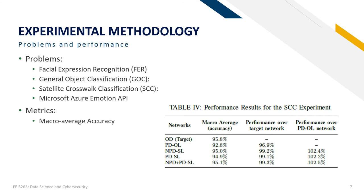Next, the result of SCC (satellite crosswalk classification). In this experiment, all networks trained with stolen labels achieved high performance — within less than 1% difference from the target network. The worst result came from the PDOL network, and the greatest accuracy was achieved by the NPDSL plus PDSL network. Images from the problem domain improved performance by only 0.1%.